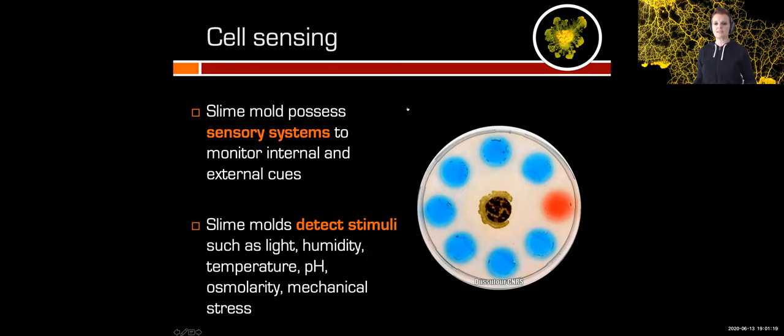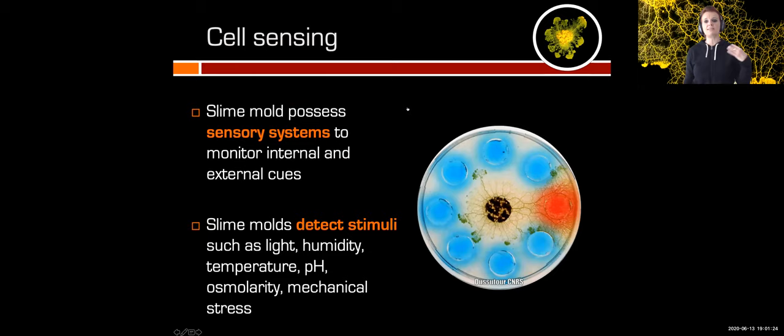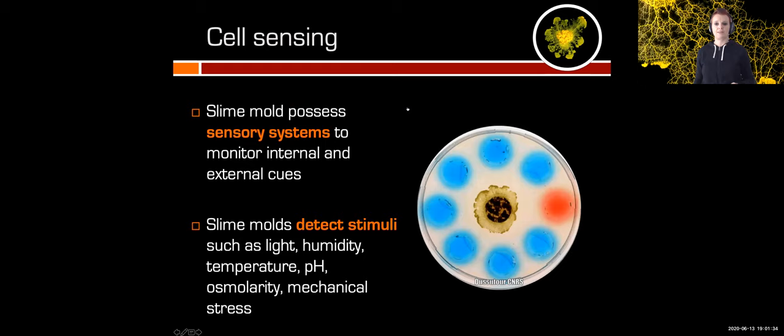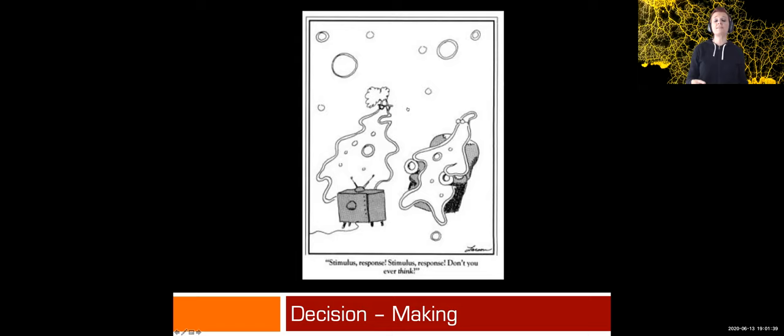Here is an example: the slime mold is facing different food sources, the red one is the best, and you can see that the slime mold goes directly to it. In fact, the slime mold can detect a tiny concentration of nutrients diffusing in the environment and follow the gradient towards the food source. In the first part of my talk I'll discuss decision-making in a foraging context, and in the second part, decision-making in a social context.